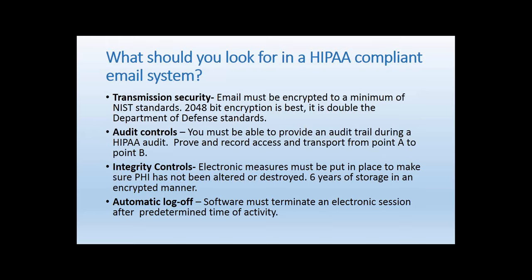Next is audit control — have your vendor provide proof. Show you the audit trail. This is critical: if you're ever audited, you must prove the information went from point A to point B, how it got there, when it got there, and all the details in between. Integrity controls require your vendor to protect information from being altered or destroyed, and they must store it for up to six years in an encrypted manner.